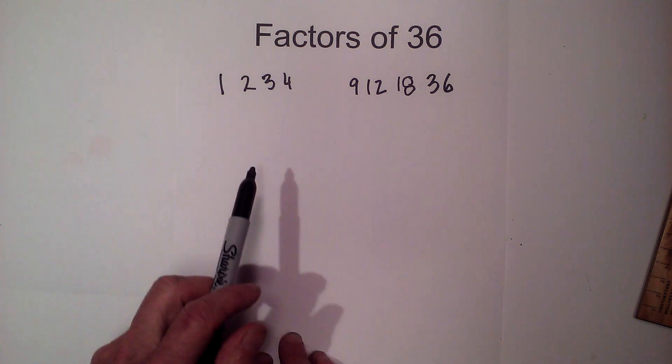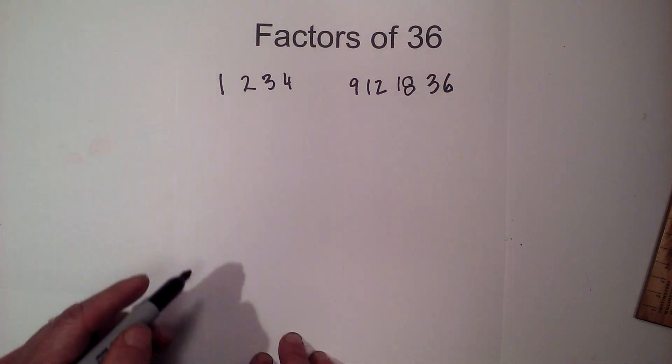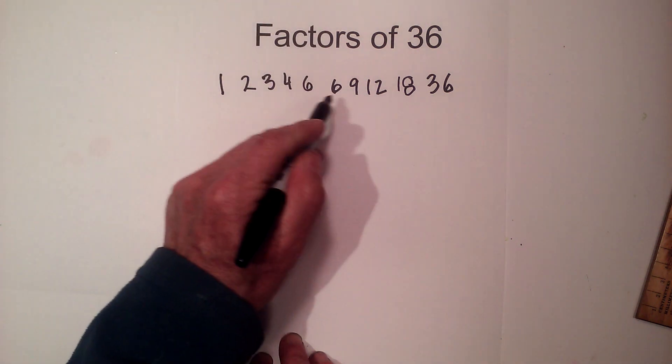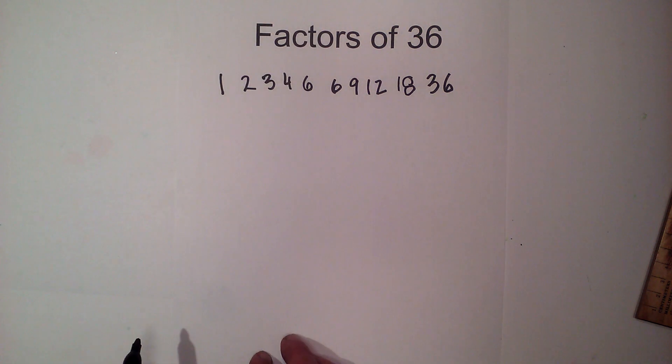Will 6 go into 36? Yes, if 2 and 3 both go into 36 then 6 will and so it's 6 times 6 and I'm now done there's no number between 6 and 6.